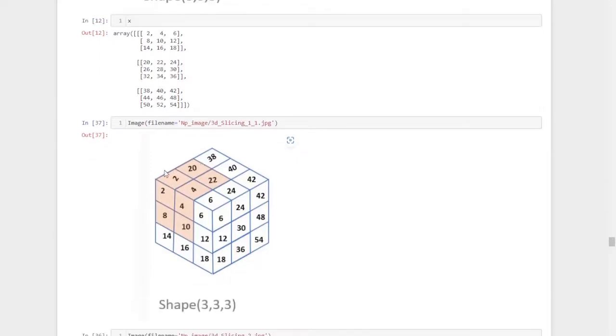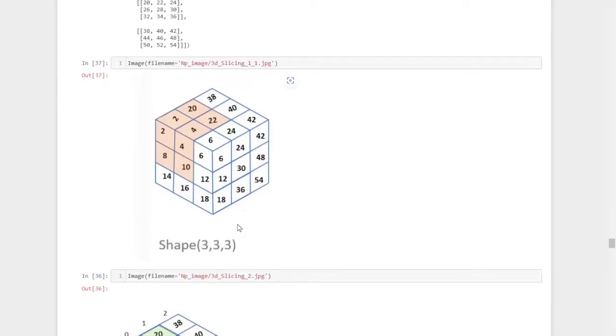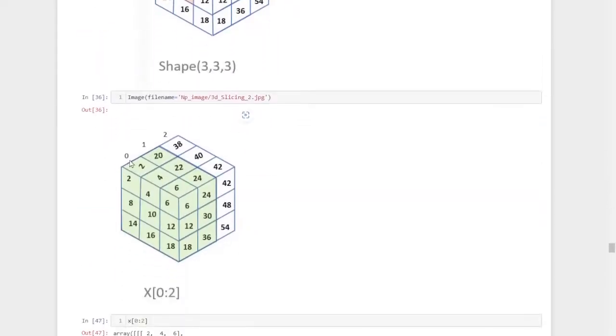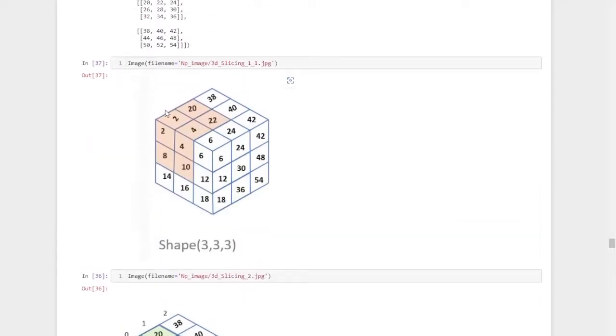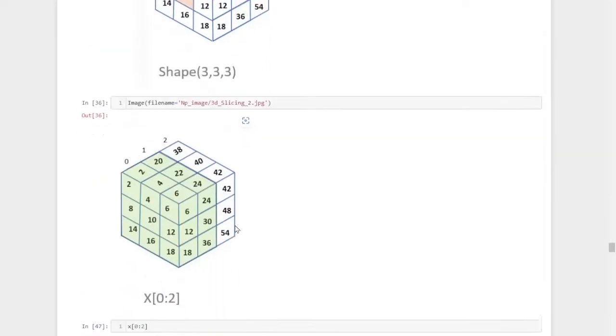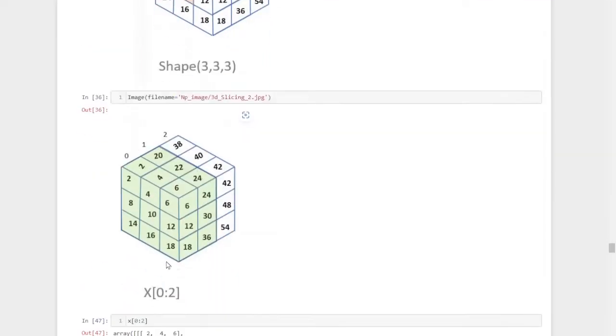Suppose we need to extract these elements. First of all, we want to understand the position of these elements in terms of layers, rows and columns. First, we'll check the layers. We have three layers here: the zeroth layer, first layer and second layer. The elements we need to trim out are in the zeroth layer and the first layer.